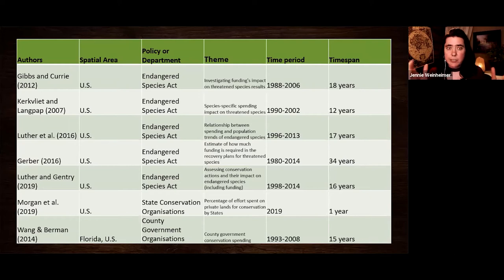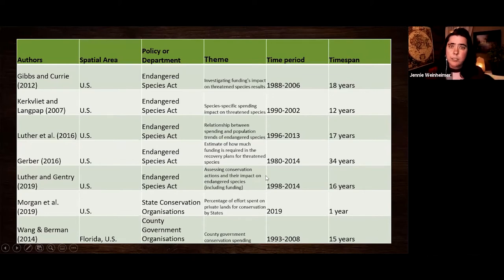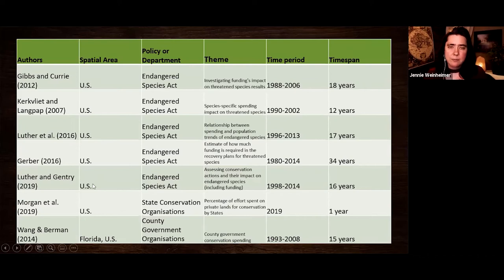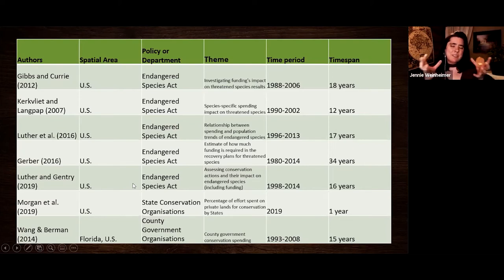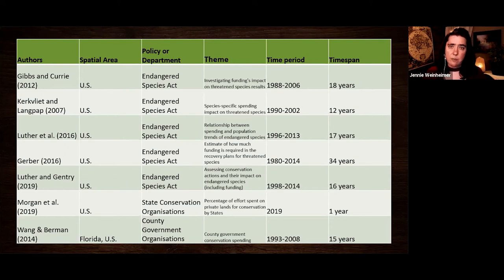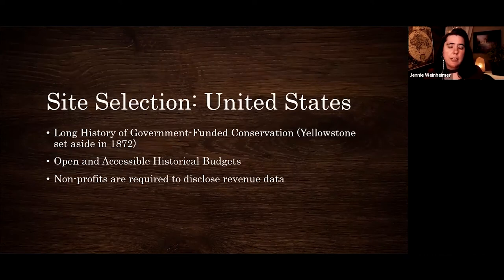There's quite a bit of literature addressing conservation funding within the United States. Looking at the time spans of these articles, we're generally looking at one to two decades — the longest, by Gerber, goes 34 years. The big gap I identified is that we don't have a long-term perspective. The issues that created the current biodiversity crisis have been created over centuries, not a decade or two, so short-term funding analysis doesn't give us the full picture.